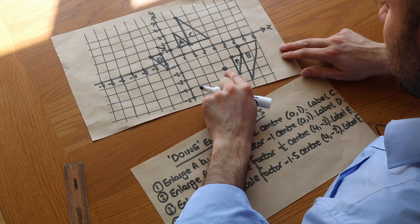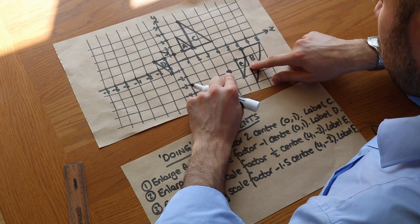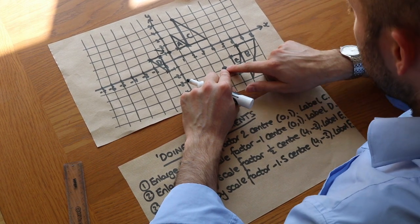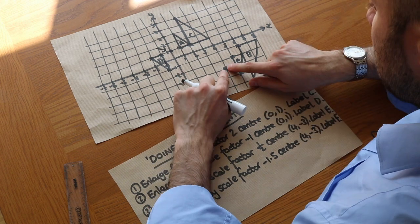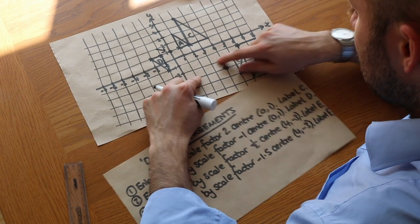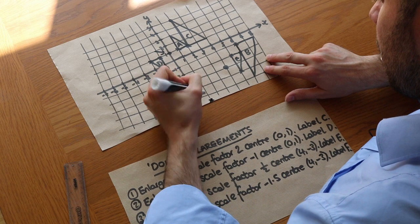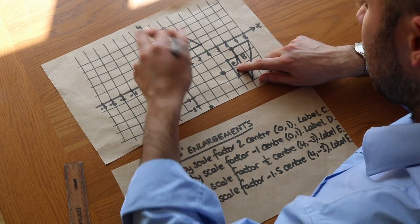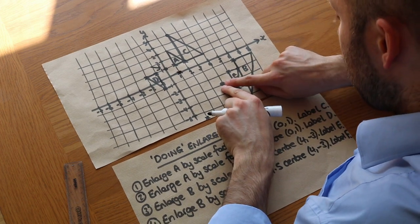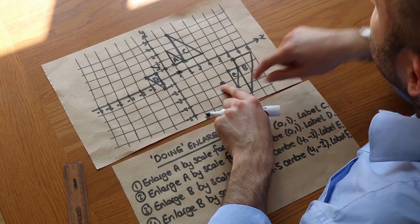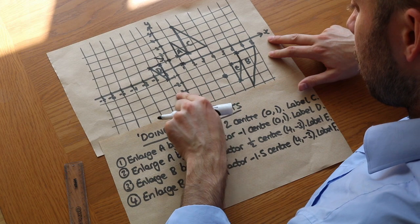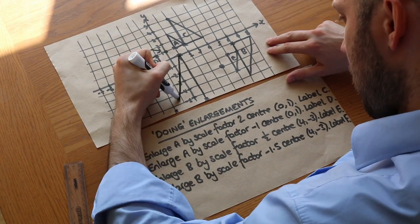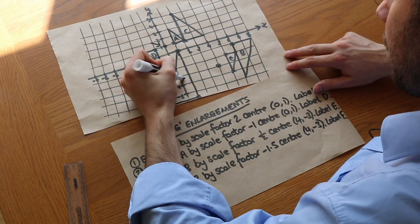Finally, enlarge B by scale factor minus 1.5 about the same centre. Going to this first point — it's two right and two up. Two times minus 1.5 is minus three, so the two right becomes three left, and the two up becomes three down. The next point is two right and two down: two times minus 1.5 is minus three, so it becomes three left and three up. The final point is four right and two up: four times minus 1.5 is minus six, so it's six left, and the two up becomes three down. Joining those up gives this shape.